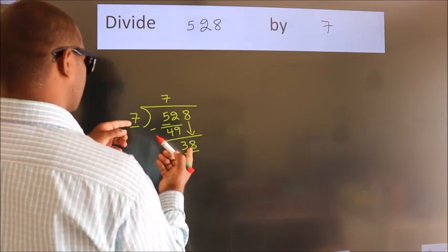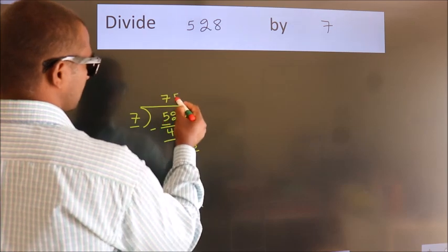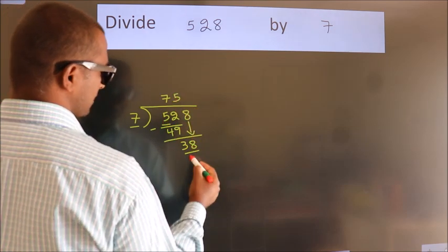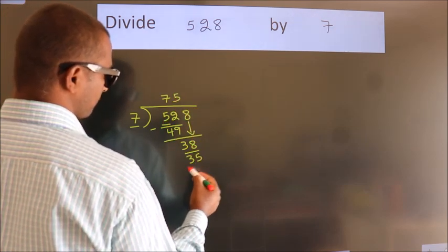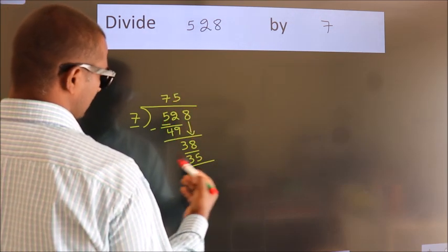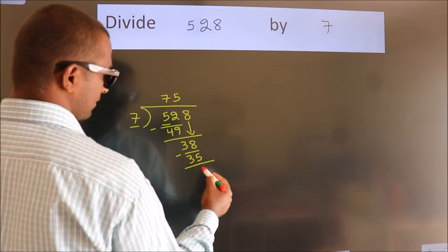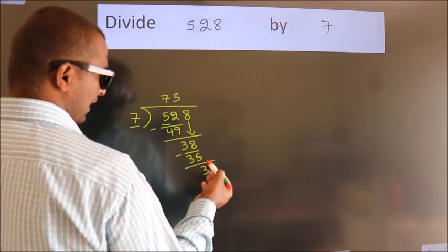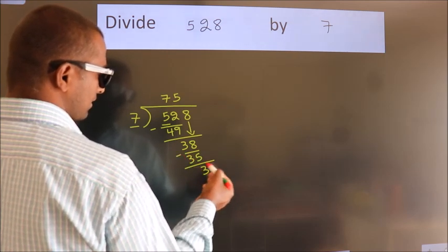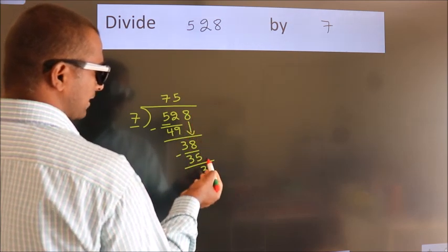A number close to 38 in the 7 times table is 7×5=35. Now we subtract: 38 minus 35, we get 3. After this, there are no more numbers to bring down.